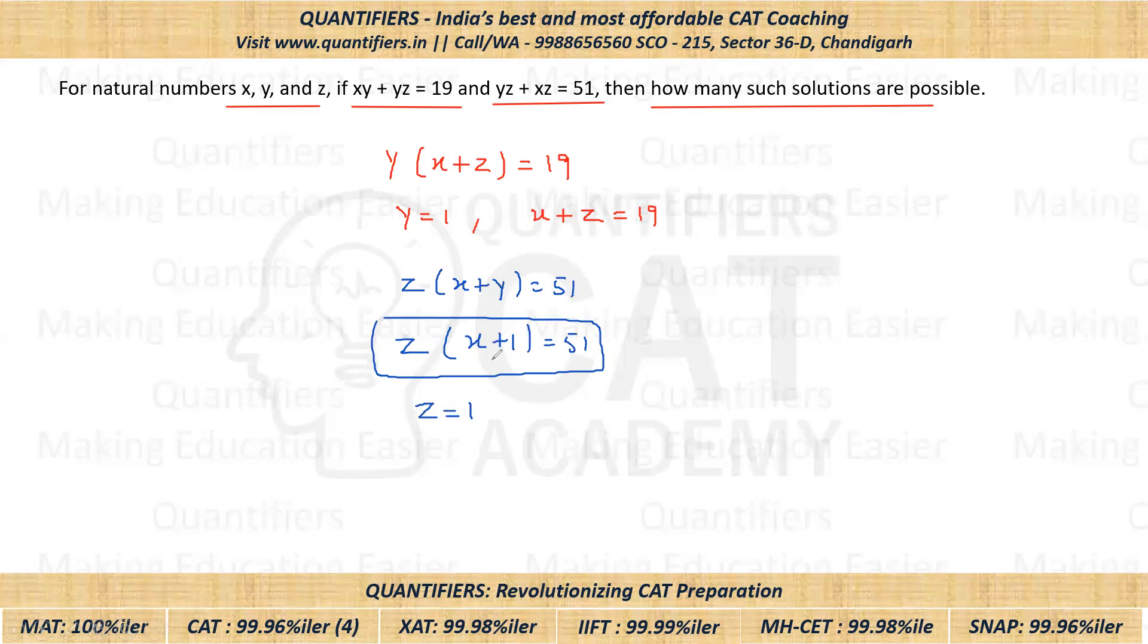In that case, can I say x plus 1 will be 51? And if x plus 1 is 51, that means x will be equal to 50. Now students, just look at this. If z is 1, x is 50, and we know that x plus z is 19, but in this case we are not getting x plus z as 19. That means z equals 1 is not possible here. It's incorrect because it should satisfy this equation as well.